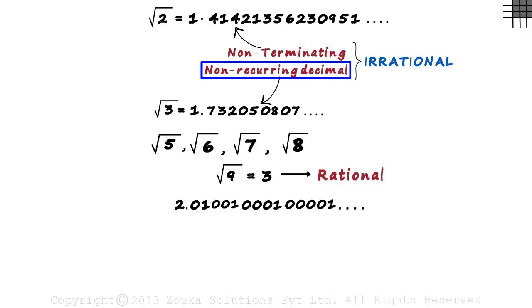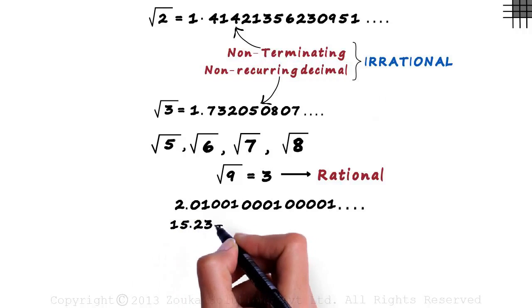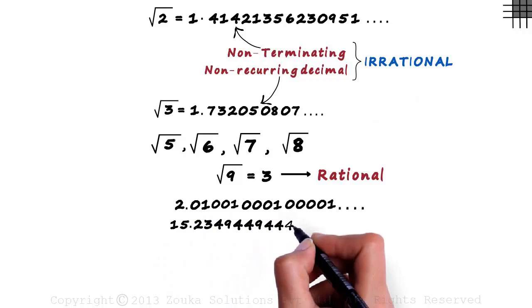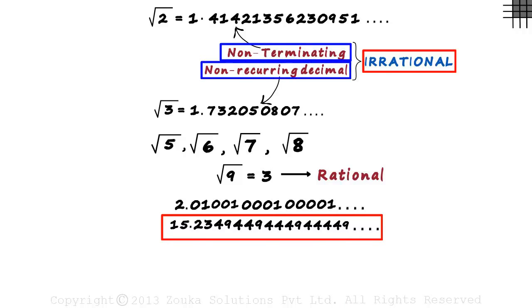This means that there is no pattern that repeats forever. You can even have a number like 15.2349, 449, 4449, 4449 and so on. This is also irrational as it is non-terminating and non-recurring.